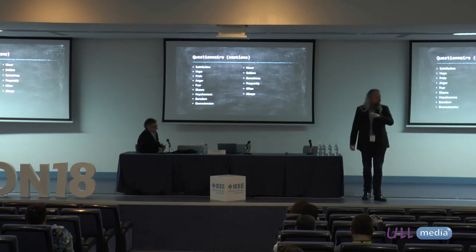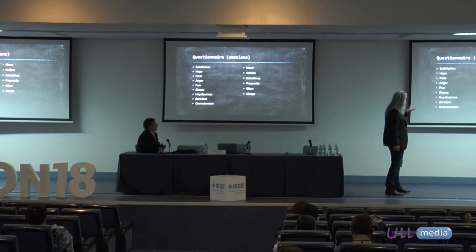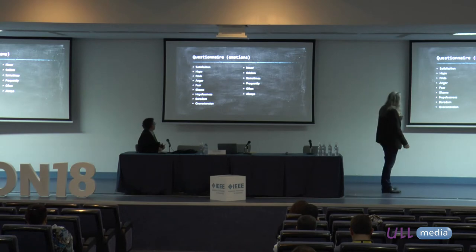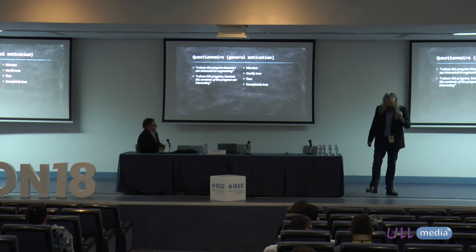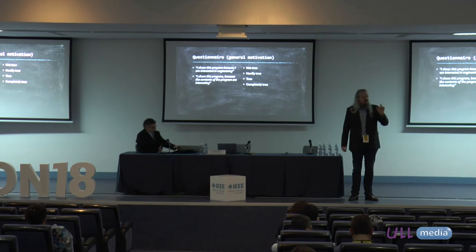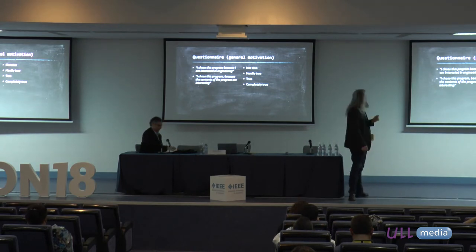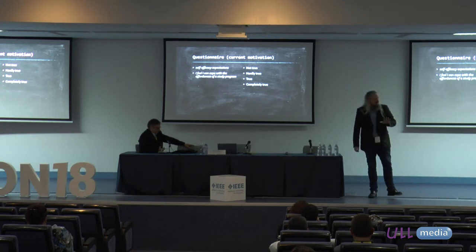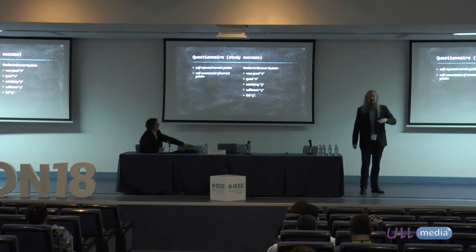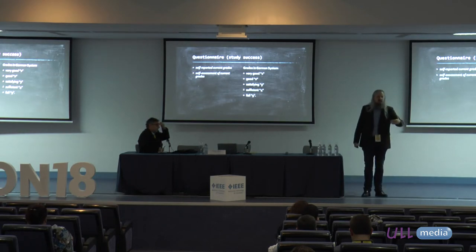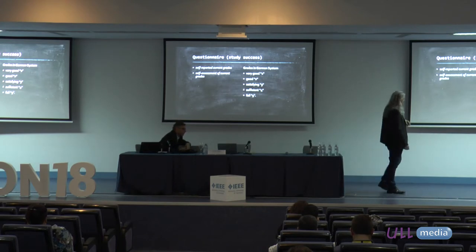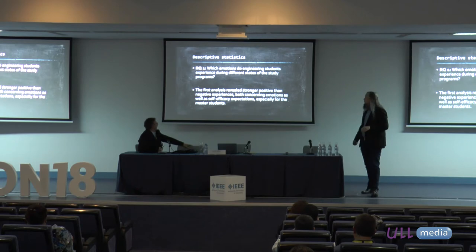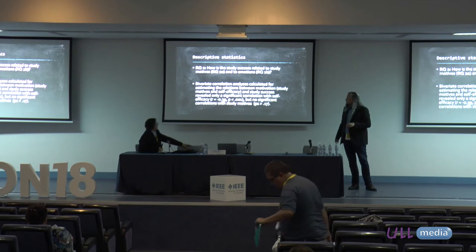We have data from a university and a university of applied science; everything was set up in the 2017/18 semester. We used an emotion map from the literature. We asked about general motivation — is there a relation between study success and motivation? Then current motivation — why are you doing this at exactly this point? And study success so far — we simply asked students whether they consider themselves successful. The German grading system runs from 1 (best) to 5 (failed).